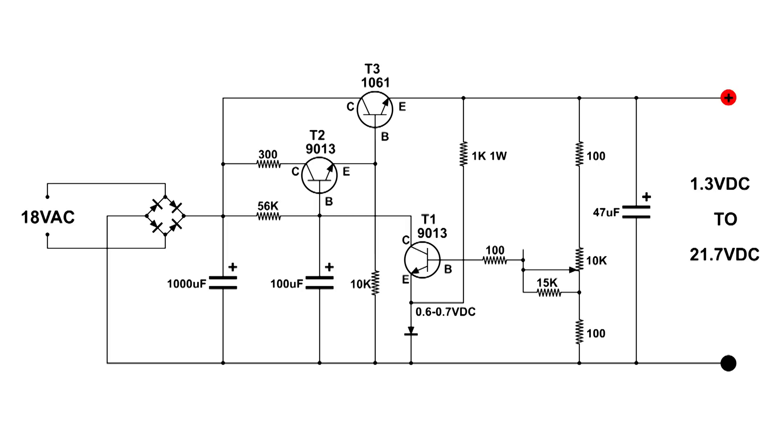In the earlier video, we saw that this regulator with 18 volts AC going in can produce up to 21.7 volts out, and it starts at about 1.3 volts.